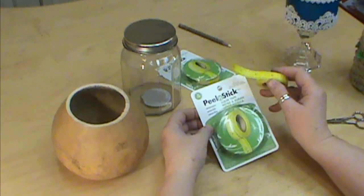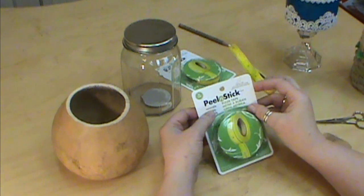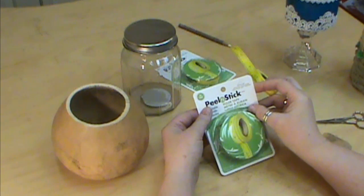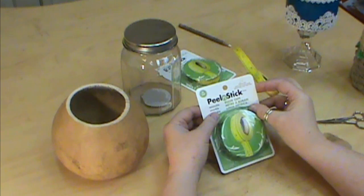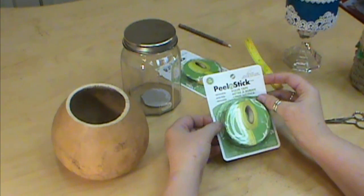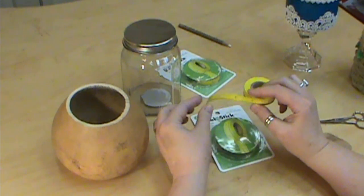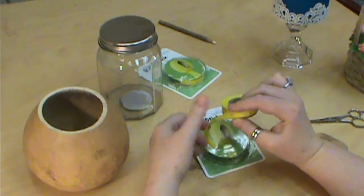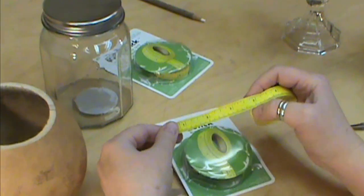Our peel and stick ruler tape is removable and reusable so that you can use it a couple of times and that's great because you can use it until the stickiness wears off so use it as many times as you can and use it on different projects.